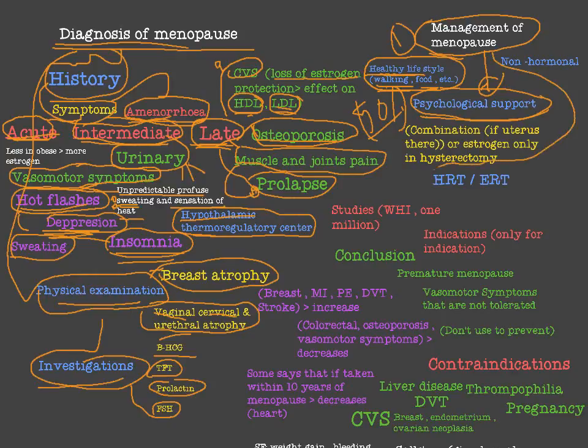The third line of treatment is hormone replacement therapy (HRT), specifically estrogen replacement therapy. When the uterus is present, we use a combination of estrogen and progestin, because estrogen alone is a risk factor for endometrial cancer and progesterone is needed to oppose it. In cases of hysterectomy, estrogen alone can be given. Androgen is also a component of HRT, for example to address sexual activity concerns.